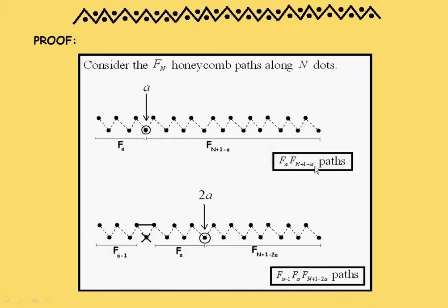So there it is. There are this many paths, F_a times F_{n+1-a}, paths that go through the ath dot.